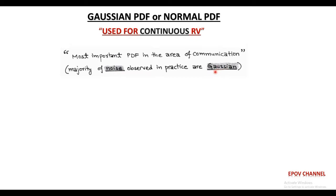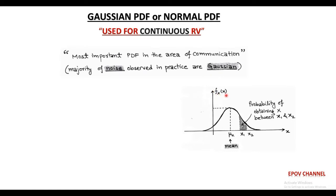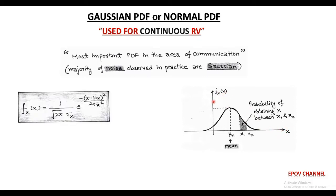Now, for any continuous random variable capital X, its Gaussian PDF is shown in the figure and expressed mathematically as a function: f(x) equals 1 upon root 2π sigma, into e to the power minus (x minus mu) squared upon 2 sigma squared. Here, mu is called the mean value of random variable X, and sigma squared is the variance of that random variable.